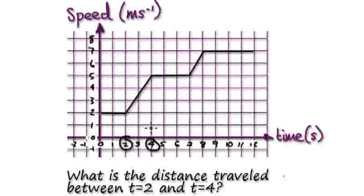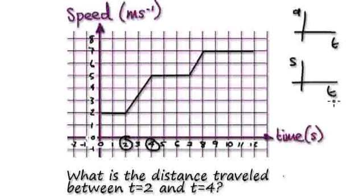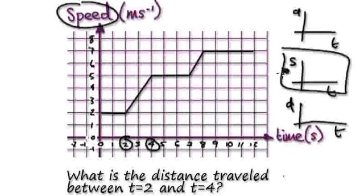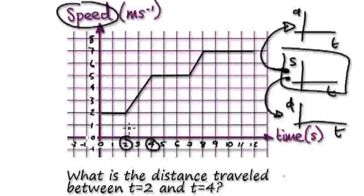So time equals 2 and time equals 4. Picture the three graphs: the acceleration-time graph, speed-time graph, and your distance-time graph. I've given you the speed-time graph. If you want to know the gradient, you want to know the acceleration, then look at the gradient. If you want to know the distance, you've got to look at the area underneath the graph.